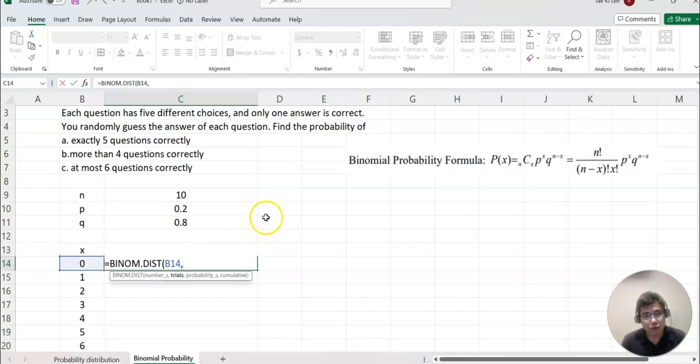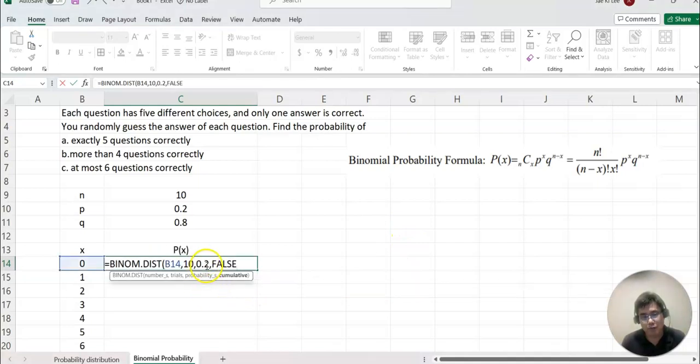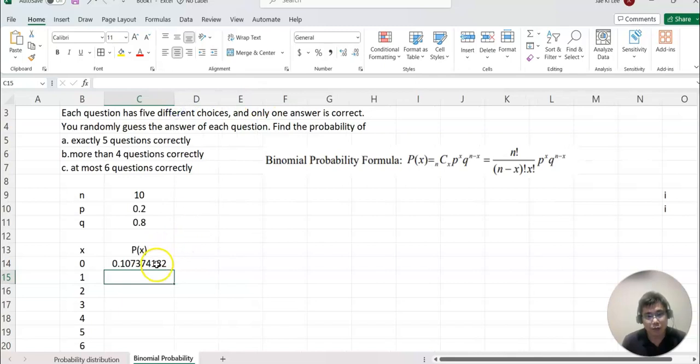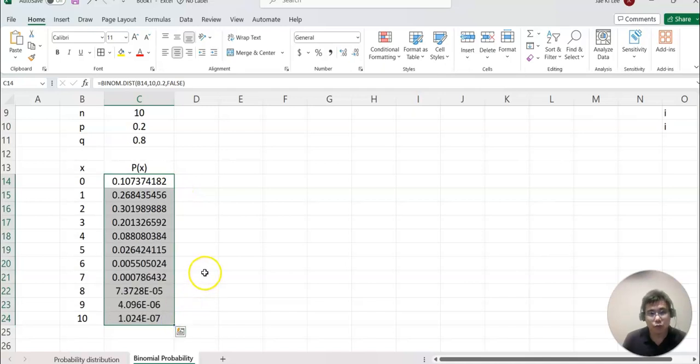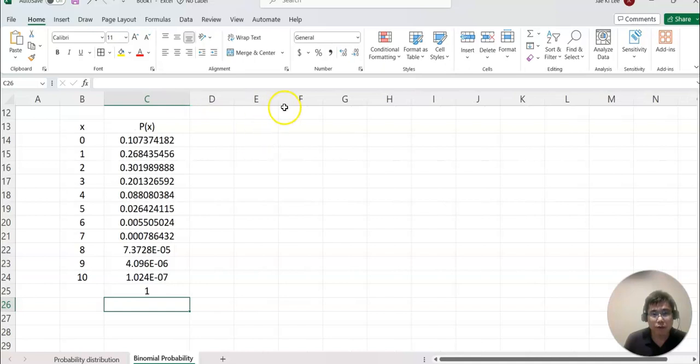Comma, trial so total 10, so type 10. Comma, probability so 0.2. Comma, you must choose false because that's the true probability, so you have to find counterpart which is false, and then enter. Now I can shrink again, go back here and copy down until 10. We want to make sure that sum equal to one, so I found total sum, it equals to one, so it is correct.